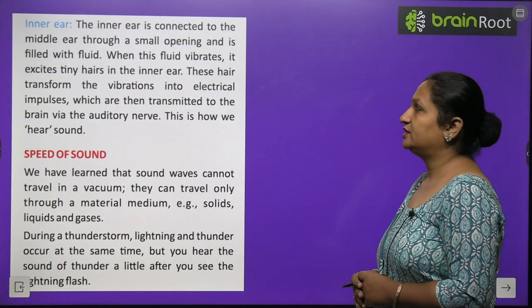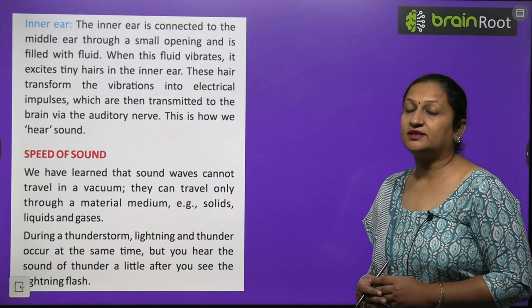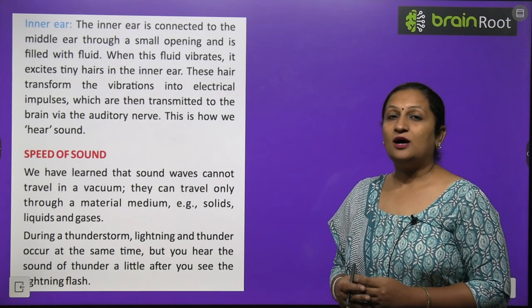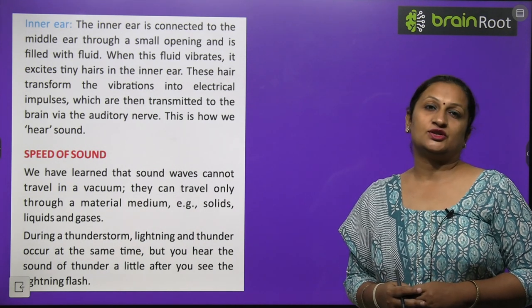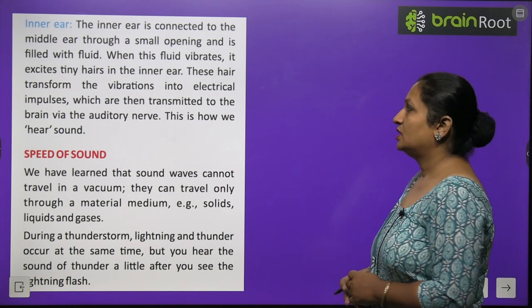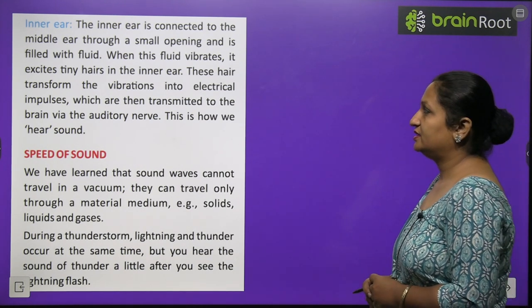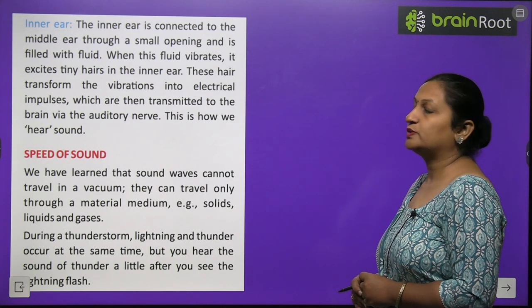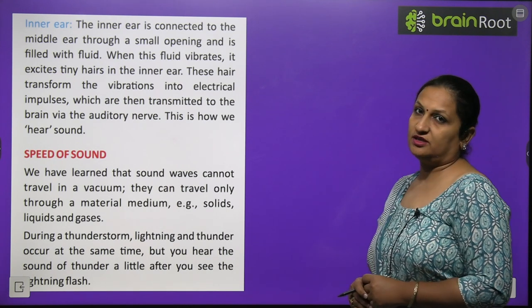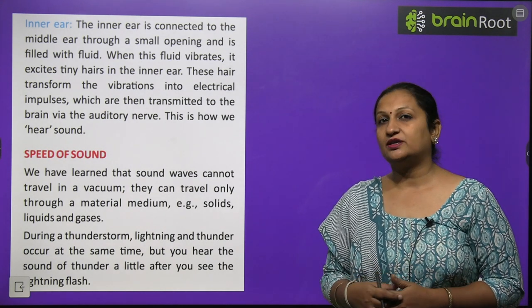The inner ear is connected to the middle ear through a small opening. This opening is filled with a fluid. This fluid vibrates, and the tiny hairs in the inner ear function. These hairs transform the vibrations into electrical impulses which are then transmitted to the brain through the auditory nerve. This is how we hear sound. The brain interprets it and sends it back to our effector organs and we are able to hear the sound.